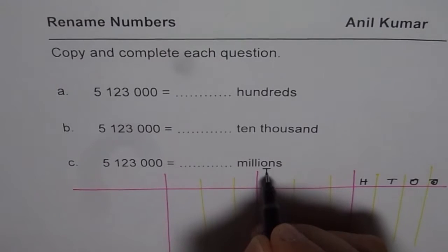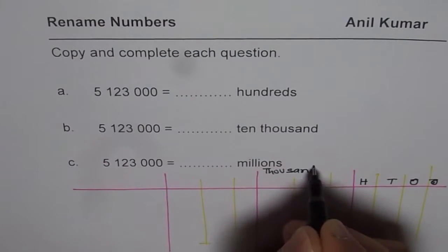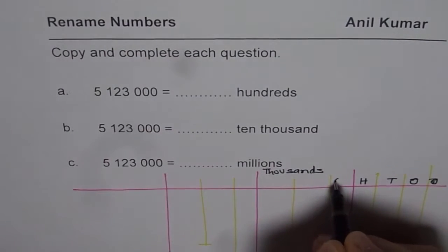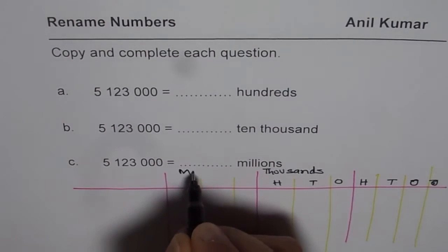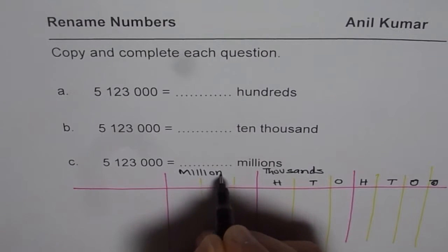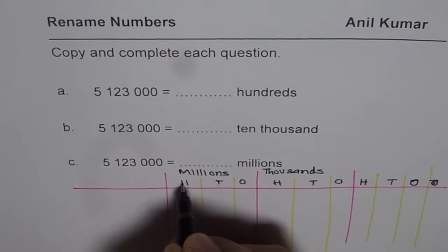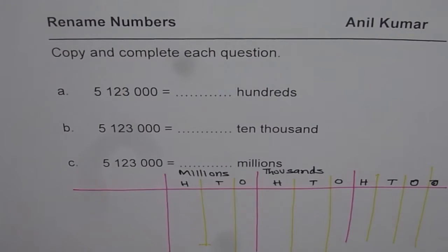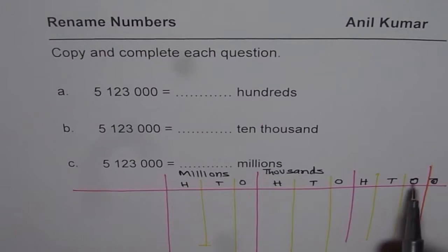The second period is for thousands — let me write thousands here. And we also have ones, tens, and hundreds within the thousands period. Then we have millions: ones, tens, and hundreds of millions. That is how we read numbers — the rightmost side is the ones place.